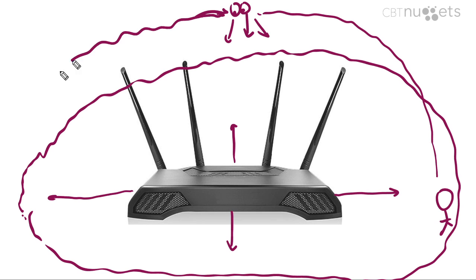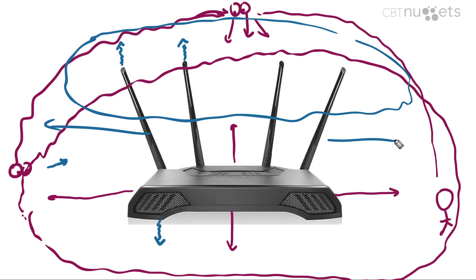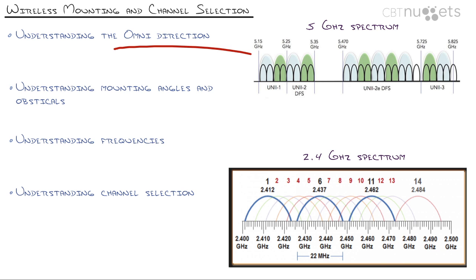If you then stared at it from the side, you'd see that very limited wireless signal actually goes up and down. These access points are really designed to shoot signal in all directions horizontally, not vertically. For those of you with multi-story homes, if your wireless access point is on the bottom floor, you may get some signal on the floor above but not much. You'll need one access point for the bottom floor and one for the top floor — and if you have a basement, you'll need one down there too.